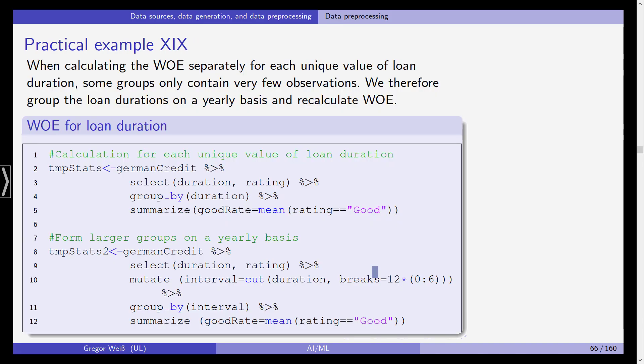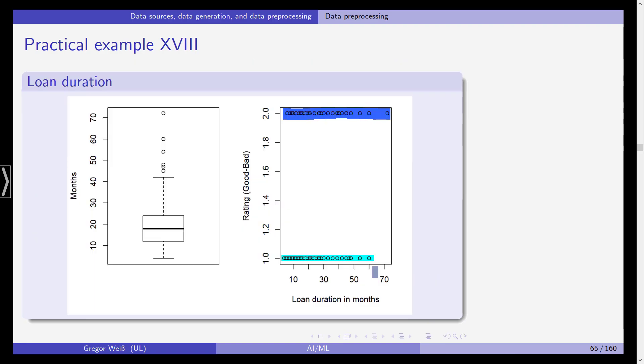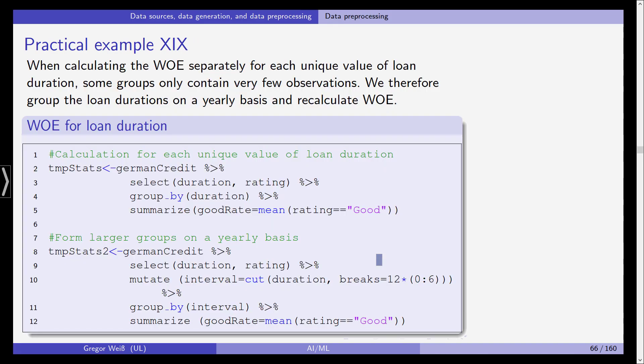But this is only speculative because the plot on the right isn't really helping here. So again, let's calculate the weight of evidence separately for each unique value of loan duration. We cannot really do this because this is an integer variable, but still, as you can see from the plots here, the thousand observations are quite dispersed across the universe of all those loan durations. So we need to create bins.